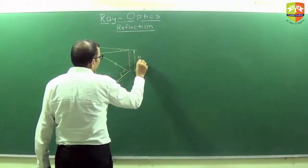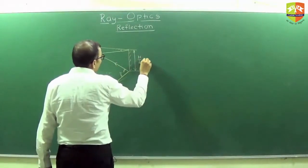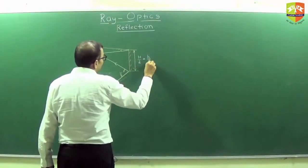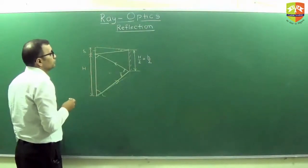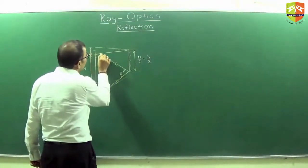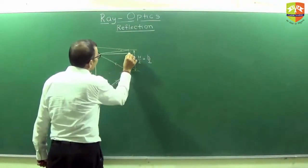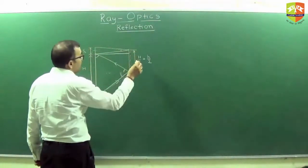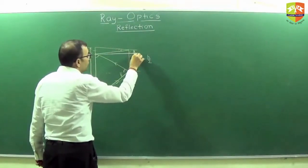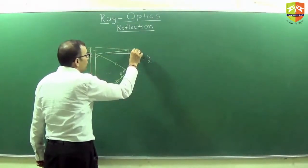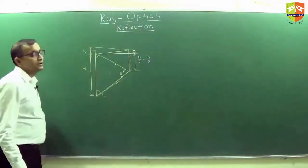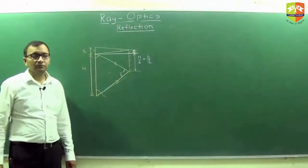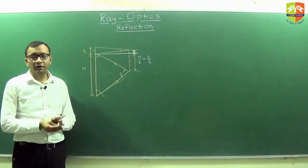The minimum mirror size is H by 2 plus small h by 2. This much is H by 2 and this much is small h by 2, so the minimum size is the sum of these two.